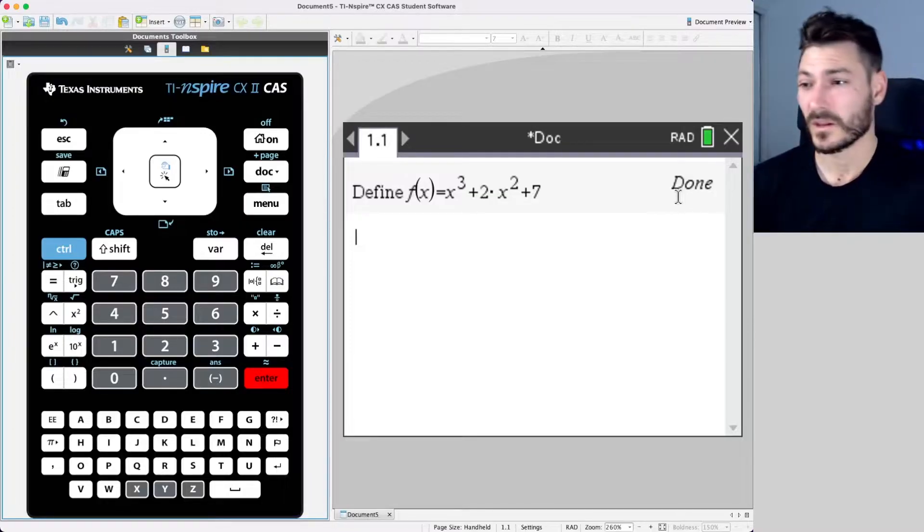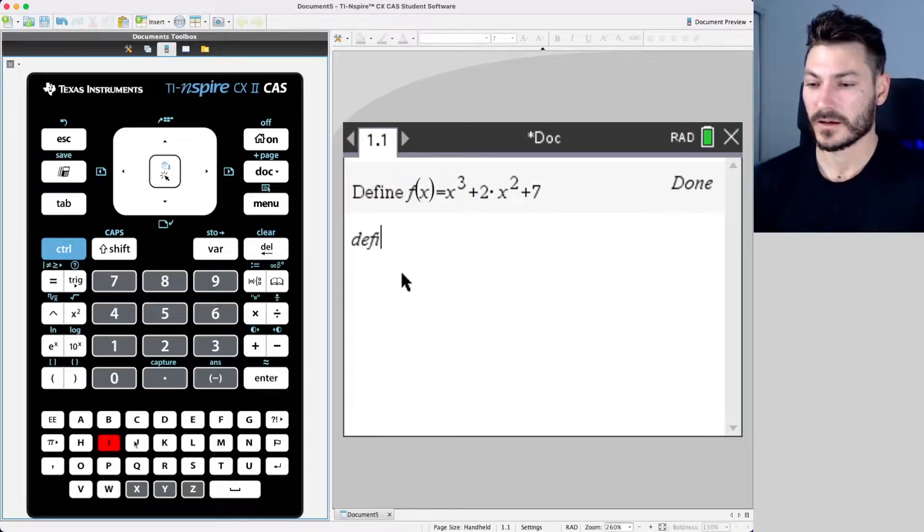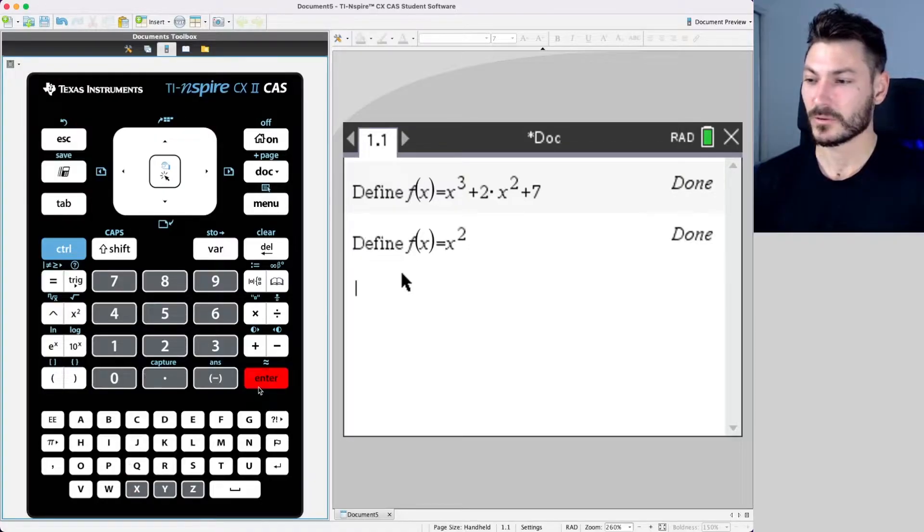That's all you have to do to define any function. Beware though, if you define another function of x, for example, if I type D-E-F-I-N-E space f(x), I'll do a very simple one now for time. f(x) equals x squared and hit equals. It's going to overwrite your previous function.